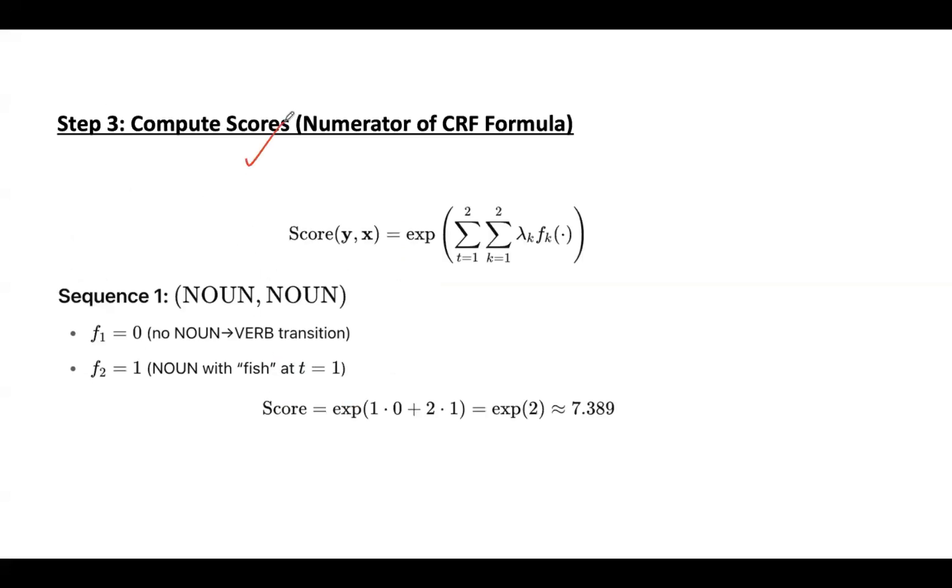Compute the scores. You can see the formula for that, which means for each position t equal to 1, 2 and each feature function fk, compute the weighted sum of the feature values and exponentiate the total. Let us move to the first sequence. Time t equal to 1, noun comma noun.